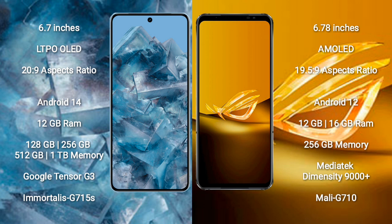The Google Pixel 8 Pro runs on the Android 14 operating system, while the ASUS ROG Phone 6D runs on Android 12. The Google Pixel 8 Pro comes with 12 GB RAM and 128 GB, 256 GB, or 512 GB internal storage, powered by the Google Tensor G3 processor with Immortalis G715s GPU. The ASUS ROG Phone 6D comes with 12 GB or 16 GB RAM and 256 GB storage, with a MediaTek Dimensity 9000 Plus processor and Mali-G710 GPU.